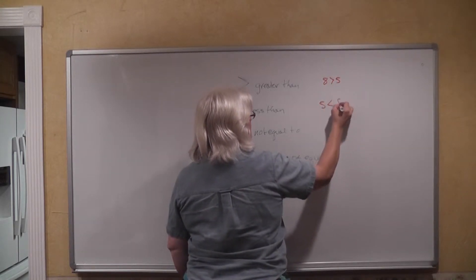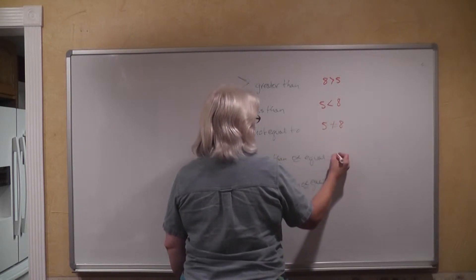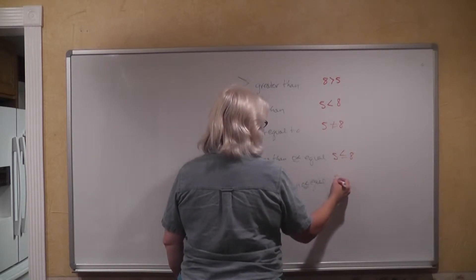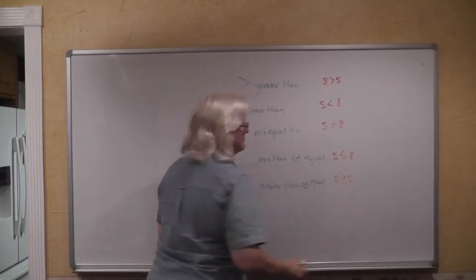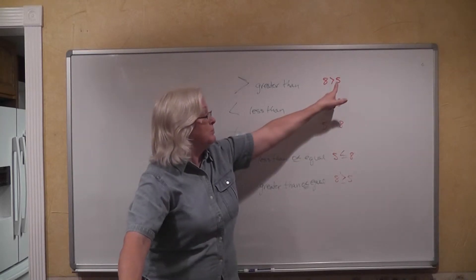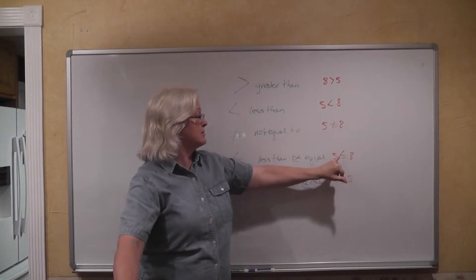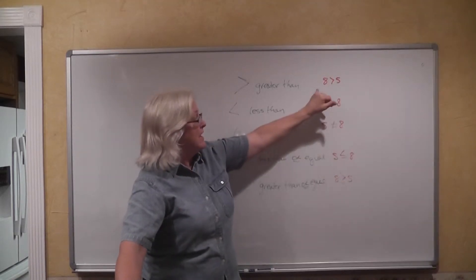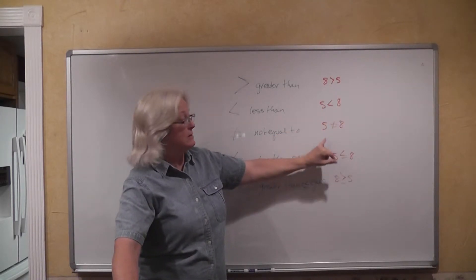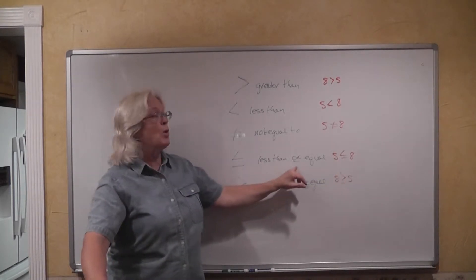How five is less than eight. Five is not equal to eight. Five is less than or equal to eight. Eight is greater than or equal to five. These are true expressions. The point of this mouth here points to the smaller number — it's always going to be pointing to the smaller number. Eight is greater than five. Five is less than eight. Five is not equal to eight. Five is less than or equal to eight.